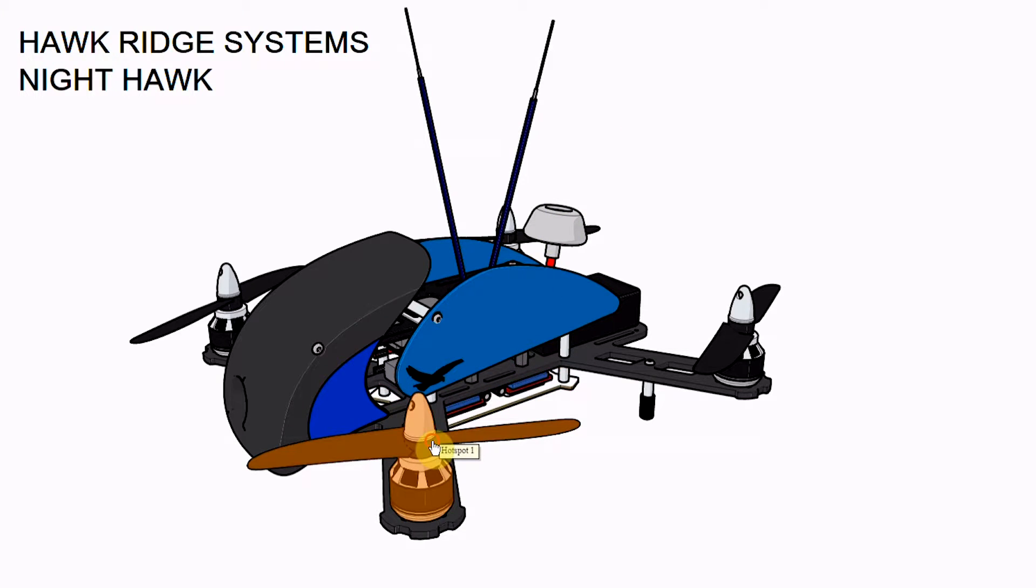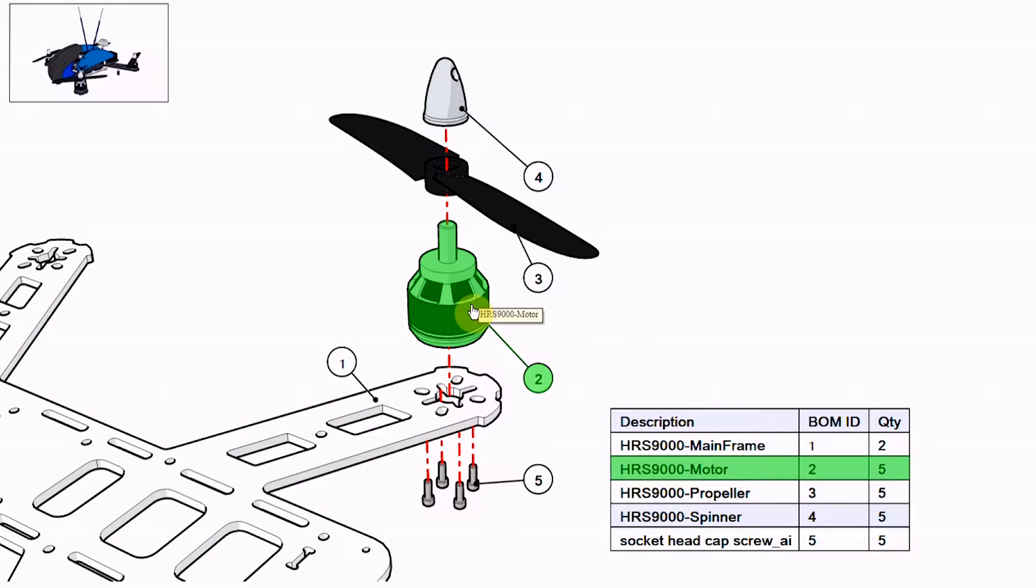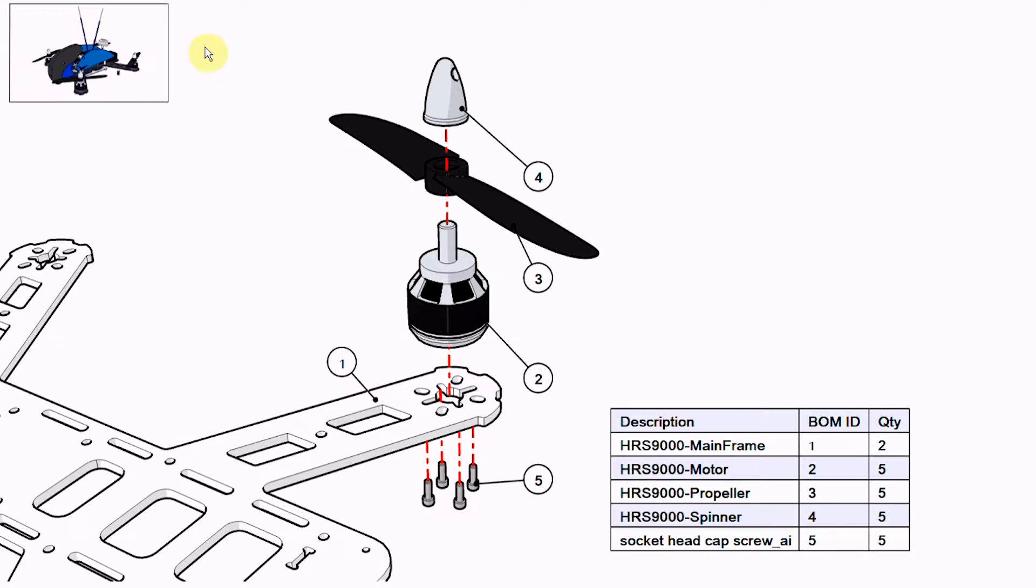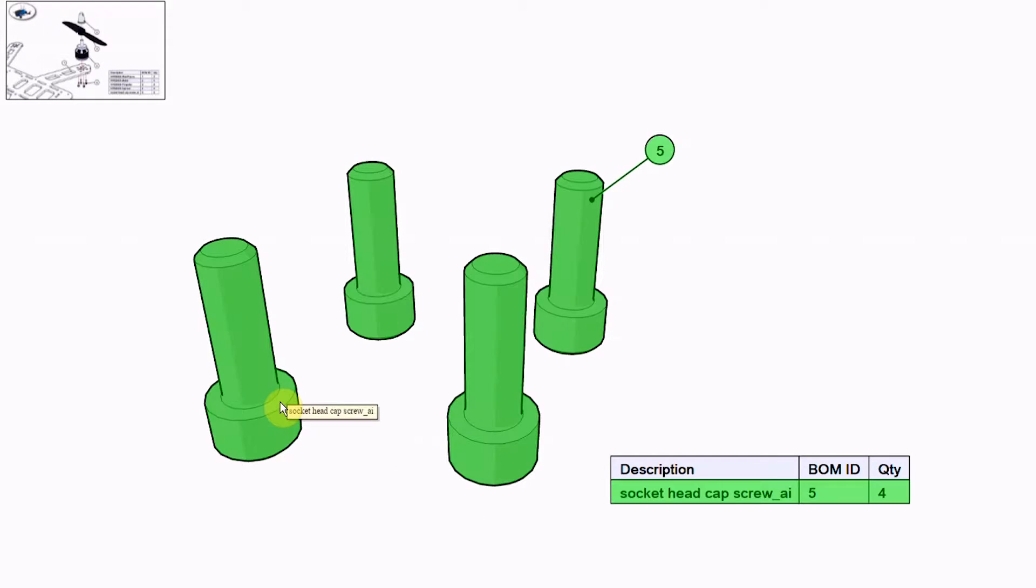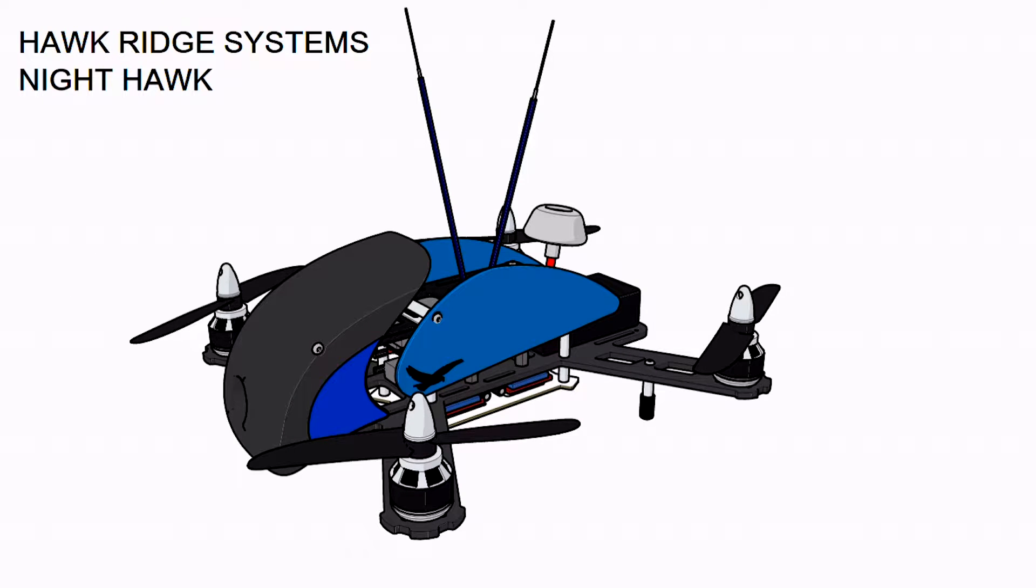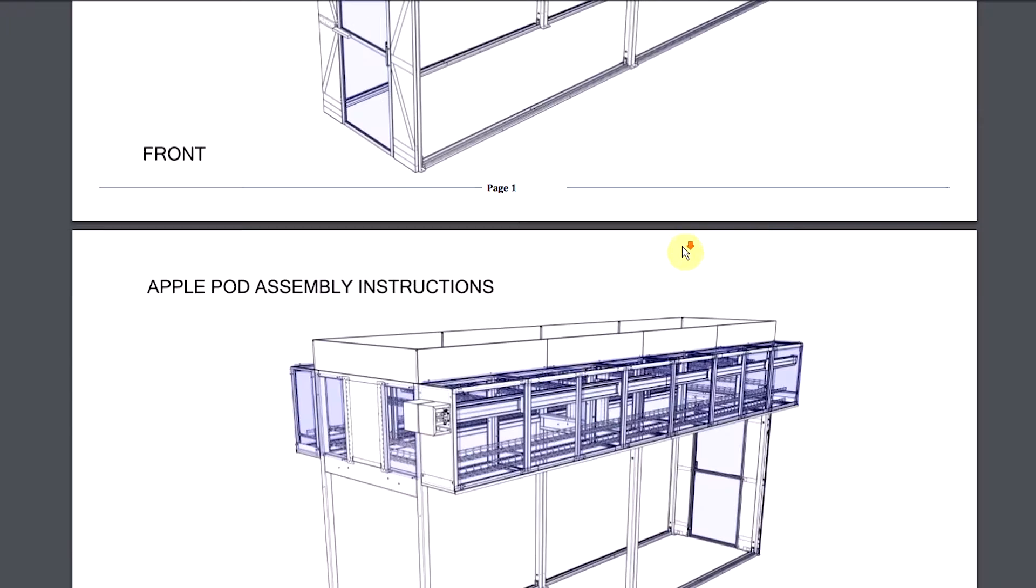Marketing and technical images can be exported in both high-resolution raster images and interactive vector graphics. Because Composer utilizes the industry standard SVG vector format, these interactive images can be linked together and viewed in virtually any browser on any device.